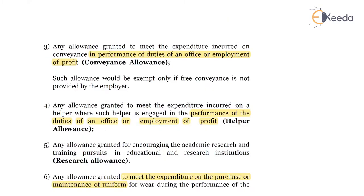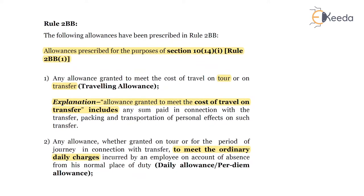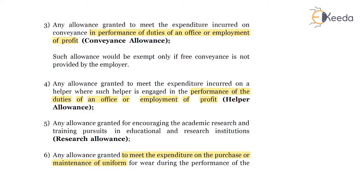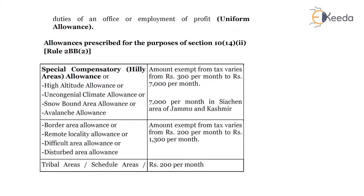Overall, we have discussed six clauses for section 10(14)(1), wherein there will be no limit on the amount of allowances received by the employee. However, the amount should be expended by the employee for the purpose of employment or in the performance of official duties. To summarize: first, traveling allowance; second, daily allowance or per diem allowance; third, conveyance allowance; fourth, helper allowance; fifth, research allowance; and sixth, uniform allowance.